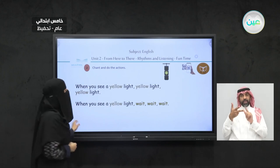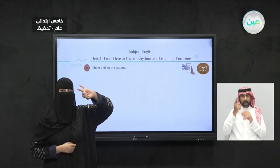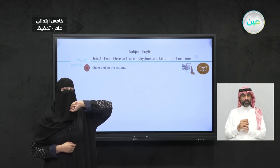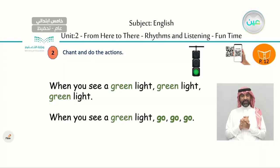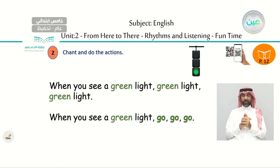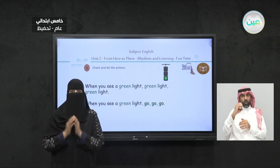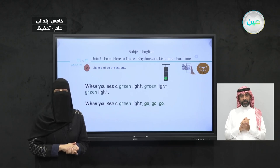Let's go to the next color. What color is it? We finished red, yellow, and now we have — yes, green! That's good, green color. Listen: when you see a green light, green light, green light. When you see a green light, go, go, go. So what should you do when you see a green light? For cars — go, go, go. For drivers to go.